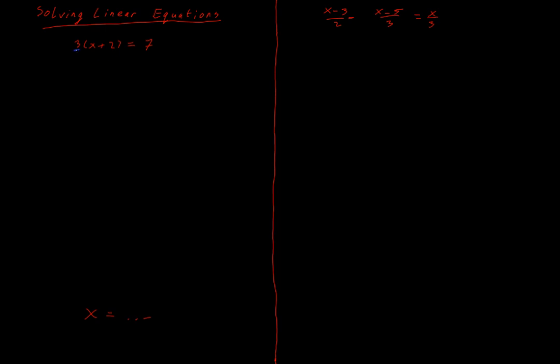So if I have three sitting outside a bracket here, I know I need to do that multiply out. So a number sitting outside the bracket is multiplied by everything inside the bracket. That's what my blue lines remind me of. So three is going to get multiplied by x and three is going to get multiplied by two. So I have 3x plus 3 by 2 is 6 is equal to 7.